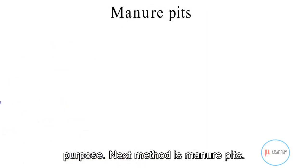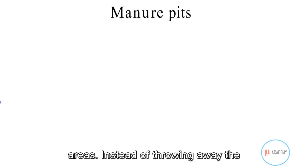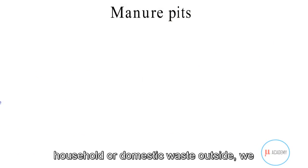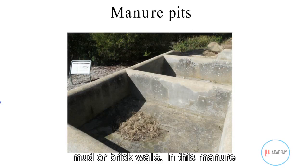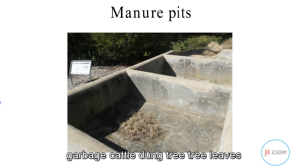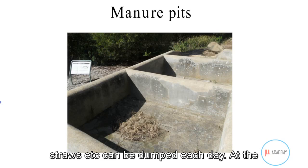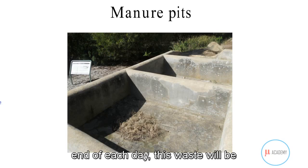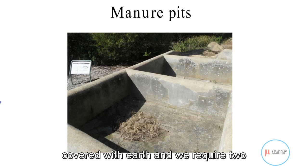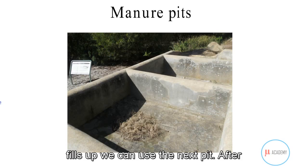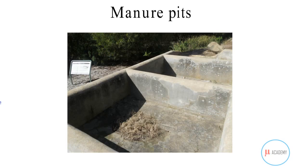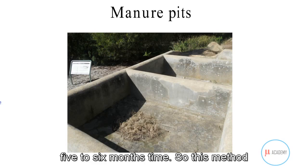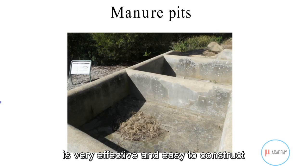The next method is manure pits, used especially in rural areas. Instead of throwing household or domestic waste outside, we build manure pits using mud or brick walls. All waste including garbage, cattle dung, tree leaves, and straws can be dumped daily, then covered with earth each day. Two pits are required: when one fills, the other is used. After a pit fills, the waste converts to manure within five to six months.